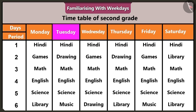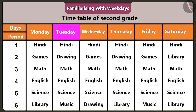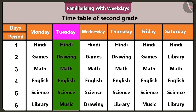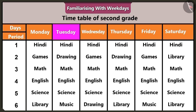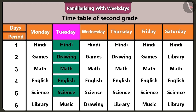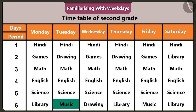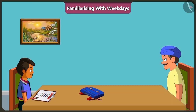Chotu, you have to keep the books for Tuesday, right? Yes. Look, in this timetable, the days from Monday to Saturday are written. Tomorrow is Tuesday, so we have to look at the subjects written in Tuesday's column. So here are the subjects: Hindi, Drawing, Mathematics, English, Science and Music are mentioned in Tuesday's column. Yes, you are right. Now I will remember this. In order to read the timetable, I will have to keep in mind the days of the week. Thank you, Uncle, for teaching me so much.